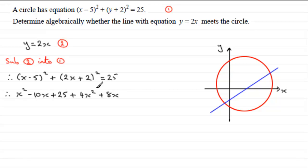And all of this equals 25. Now I can see we're going to get a quadratic equation here. If we group up the x² and 4x², we've got 5x². Group up the x terms: -10x + 8x is -2x. And then we want this to equal 0, so I'm going to subtract 25 from both sides, leaving us with +4, so 5x² - 2x + 4 = 0.